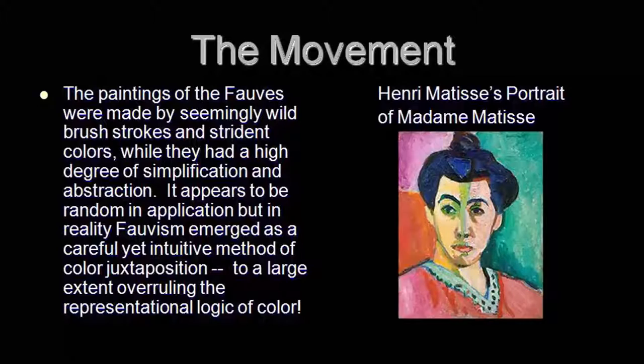Fauvism as a movement was short-lived, from 1904 to 1908, but its impact was immense. Though the movement withered away around 1908, it left a great impact on the art of painting and changed the way painters perceived colour. When you look at a Fauvist painting, perhaps for the first time, the paintings were made with seemingly wild brushstrokes and vibrant colours, while having a high degree of simplification and abstraction. It appears random in application but Fauvism emerged as a careful yet intuitive method of colour juxtaposition, to a large extent overruling the representational logic of colour.